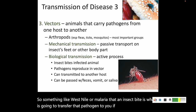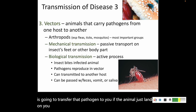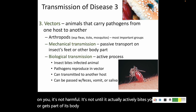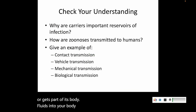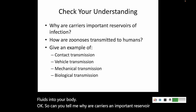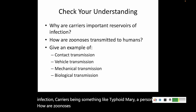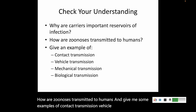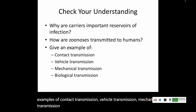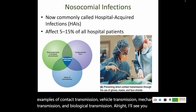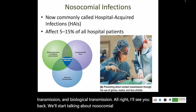It could also pass on infection through feces, vomit, or saliva from that animal. If the animal just lands on you, it's not harmful — it's not until it actively bites you or gets part of its body fluids into your body. So now: why are carriers an important reservoir of infection? How are zoonoses transmitted to humans? Give some examples of contact transmission, vehicle transmission, mechanical transmission, and biological transmission. Next, we'll start talking about nosocomial infections.